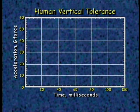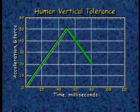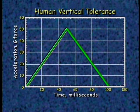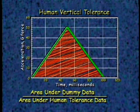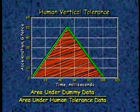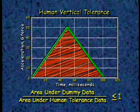We compare that area to a human tolerance graph, which shows the maximum G-force a human can tolerate over a specific time. The plot goes from 0G to 50G and back to 0G in a very short amount of time. The shaded area within the triangle represents the amount of energy a human can tolerate in 100 milliseconds. We then set up a ratio — comparing the shaded area under the dummy data to the shaded area under the human tolerance data — to determine if passengers survive. We want this ratio to be less than or equal to one.